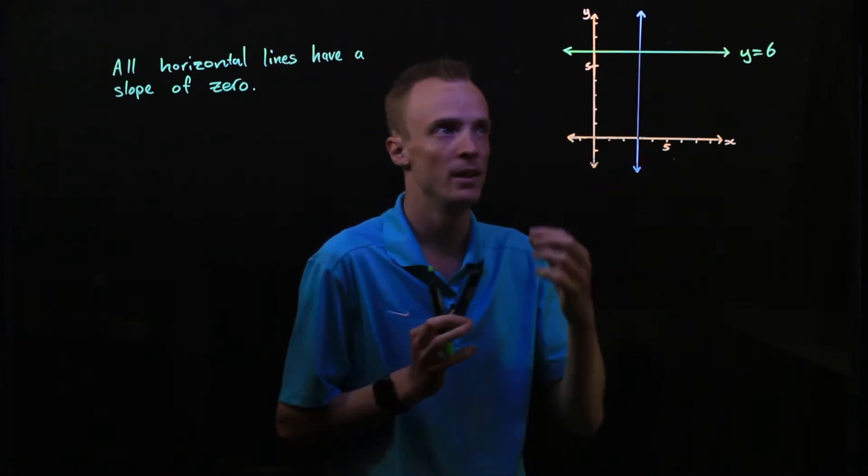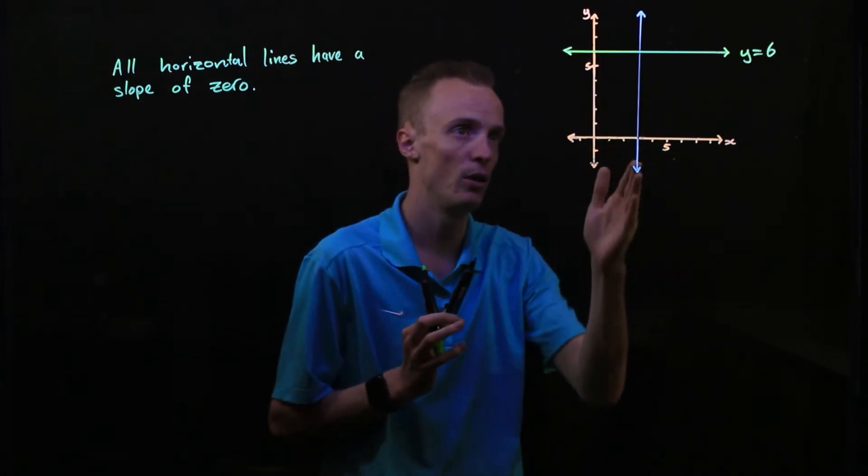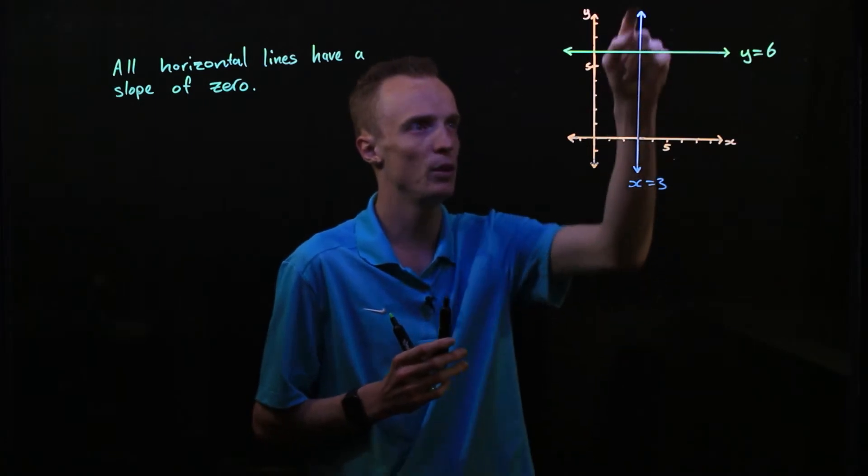So when my y value was 0, my x value was clearly 3. When my y value was negative 1, my x value is still 3. When my y value is 5, my x value is still 3. It doesn't matter on this vertical line what my y value is, my x is always equal to 3. So the equation here is x equals 3, and that describes every coordinate on this vertical line.